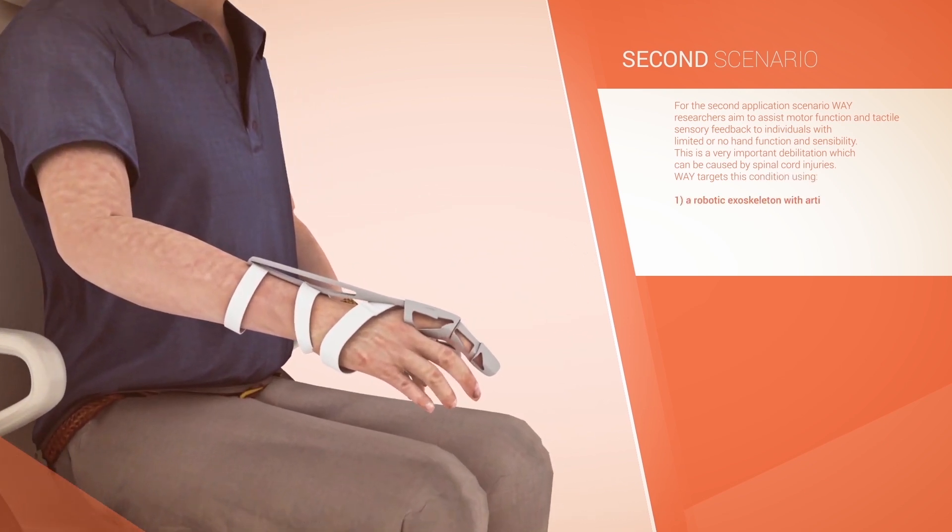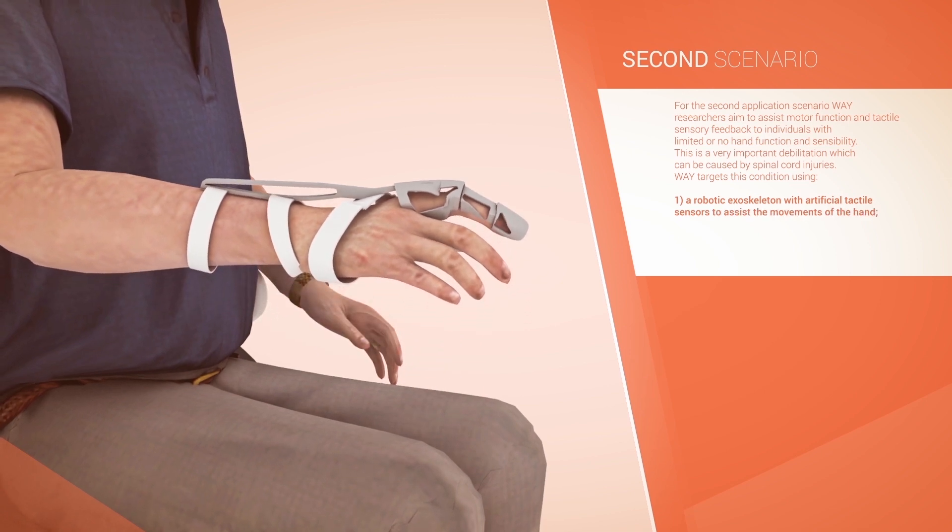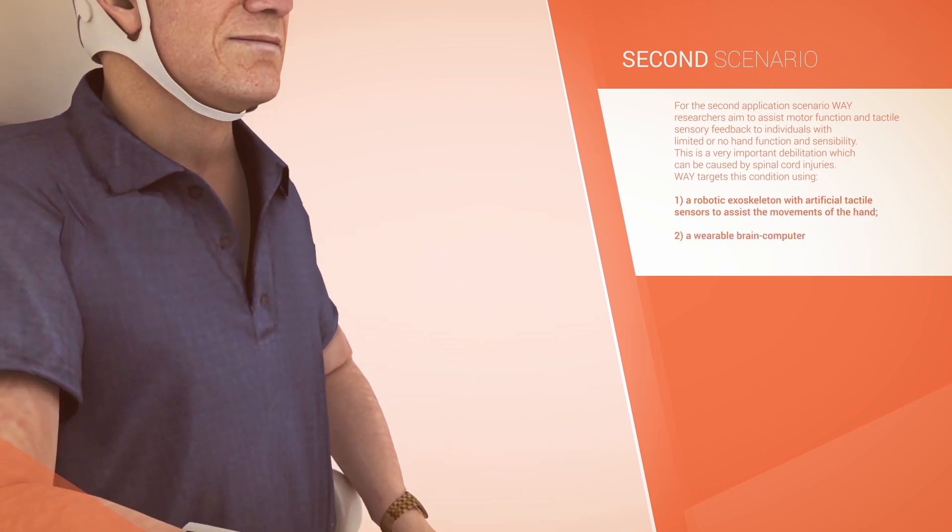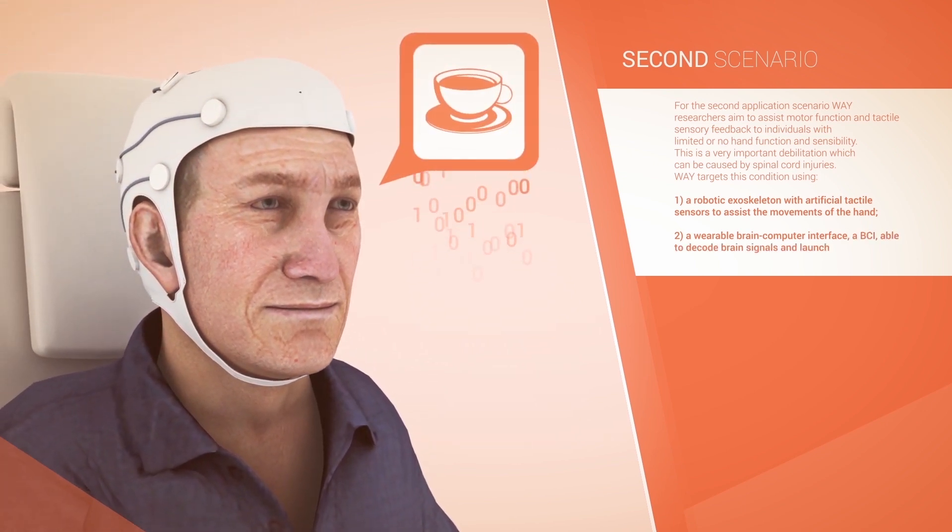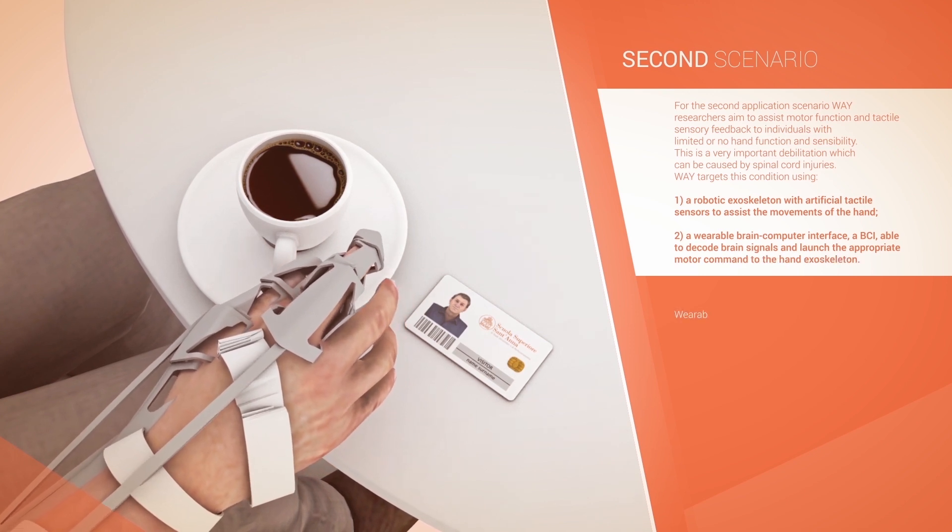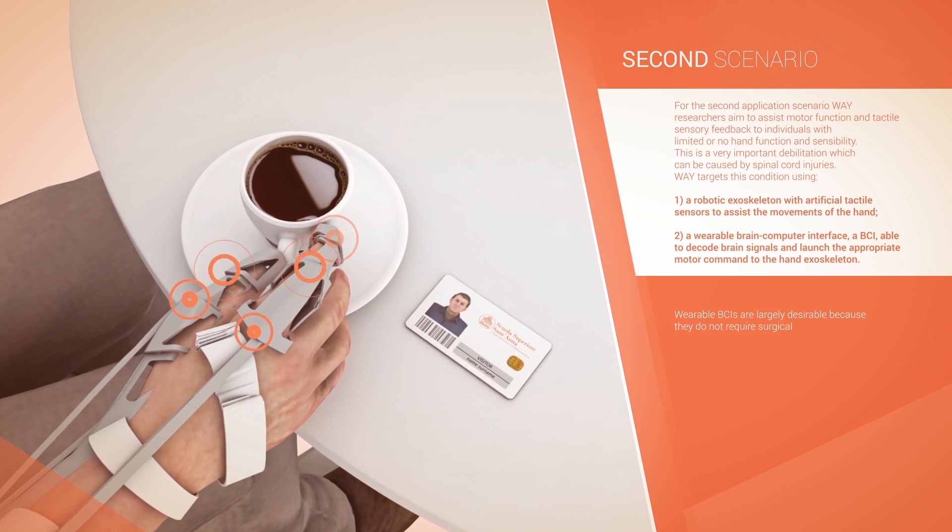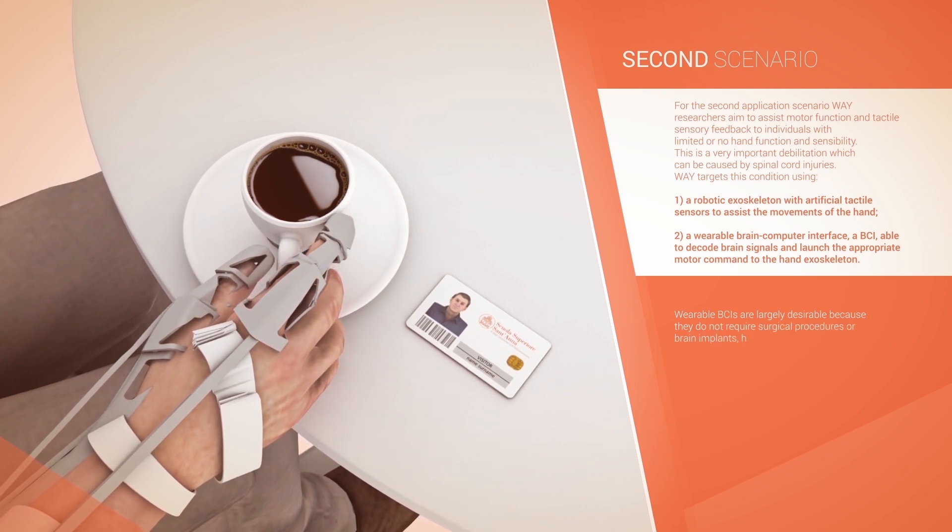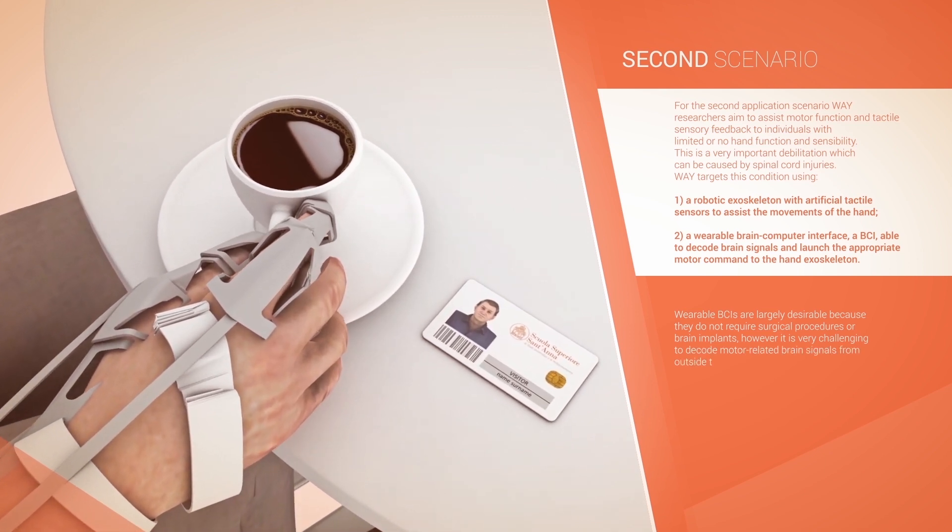WAY targets this condition using a robotic exoskeleton with artificial tactile senses to assist the movement of the hand, and a wearable brain-computer interface, or BCI, able to decode brain signals and launch the appropriate motor command to the hand exoskeleton. Wearable BCIs are largely desirable because they do not require surgical procedures or brain implants. However, it is very challenging to decode motor-related brain signals from outside the scalp.